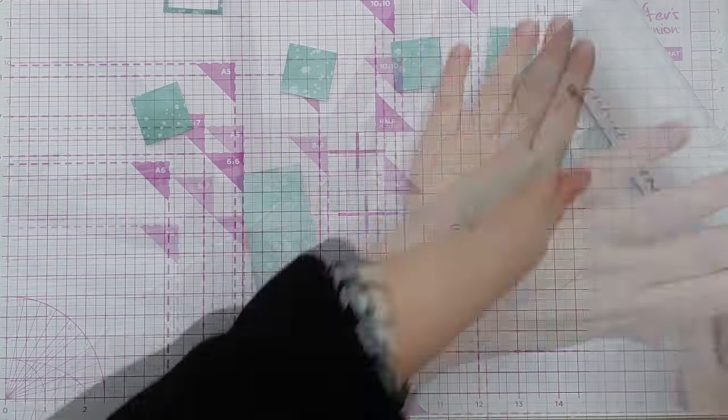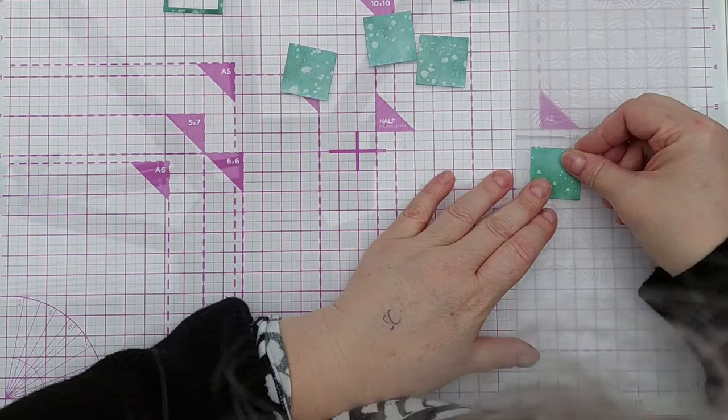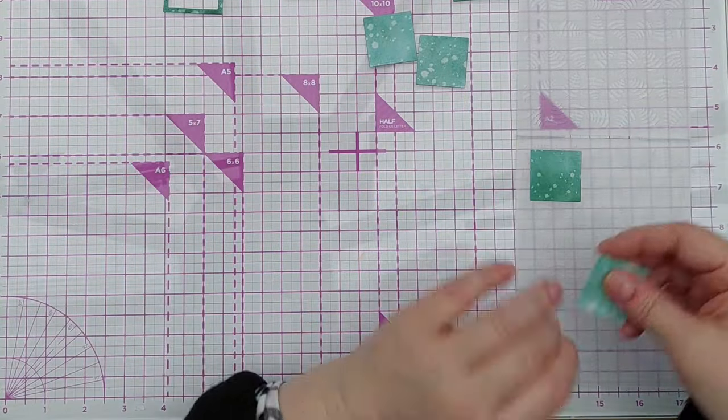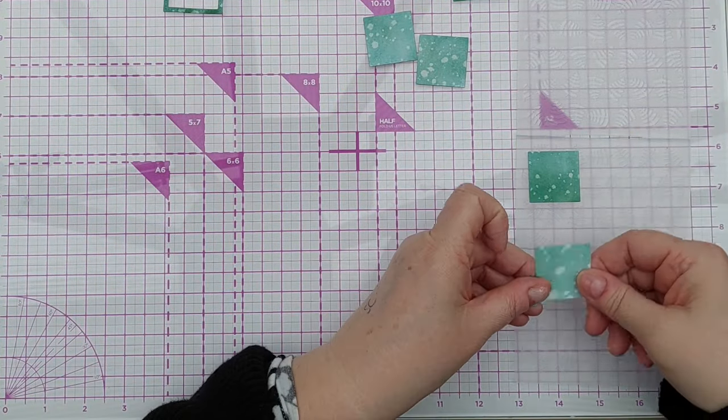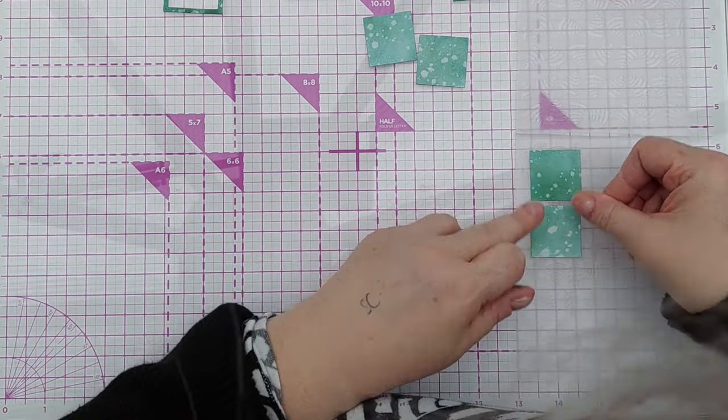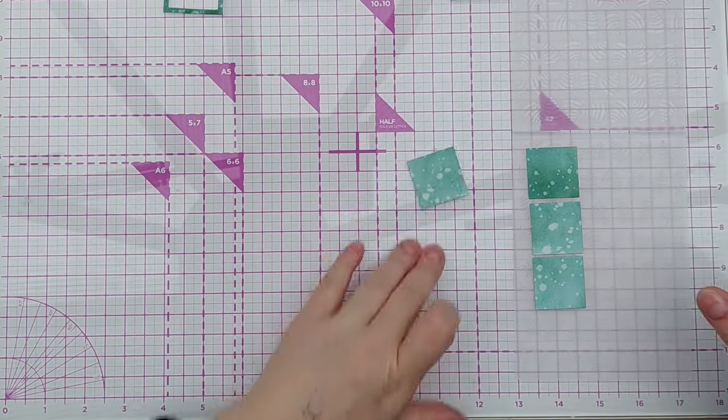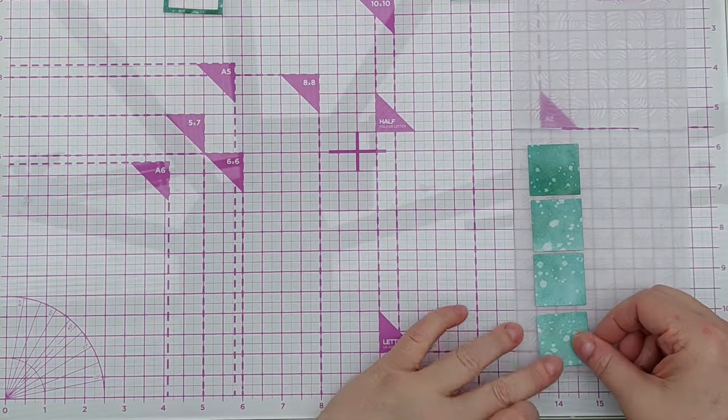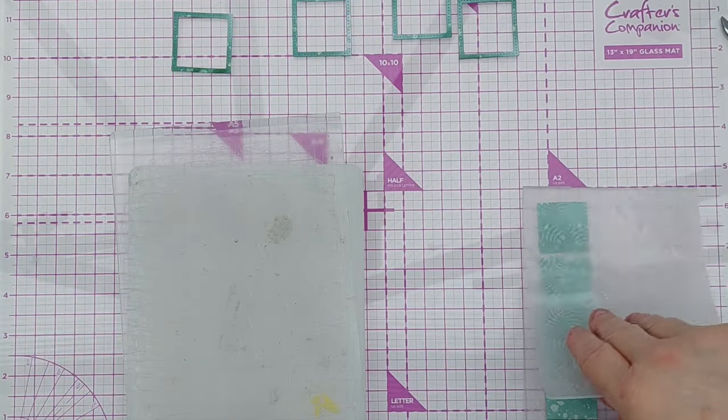After separating the squares from the frames I placed them inside my embossing folder and ran them through my cuttlebug. I didn't try too hard to line up the squares on the design as it's a loose pattern that would work from any direction really.